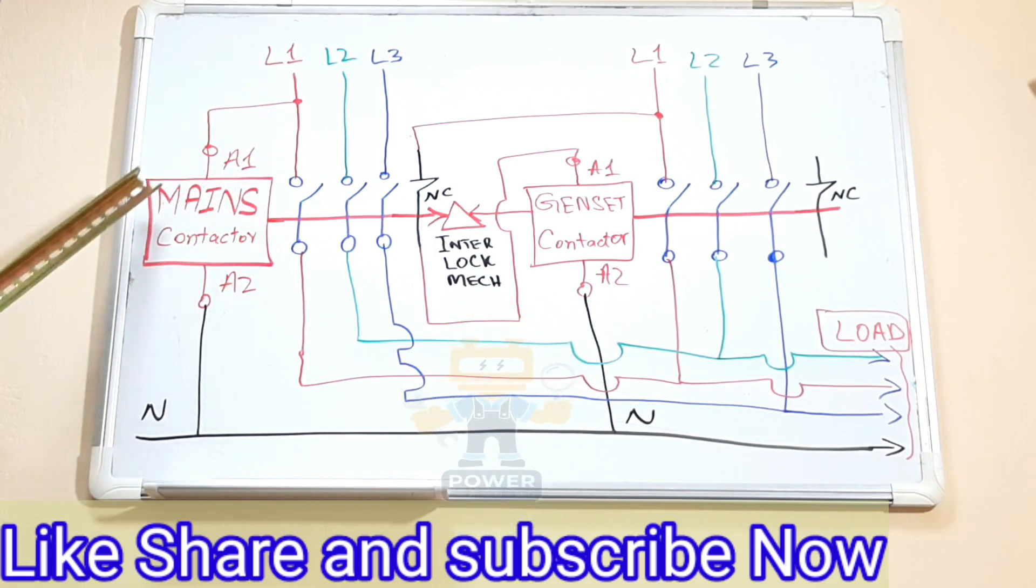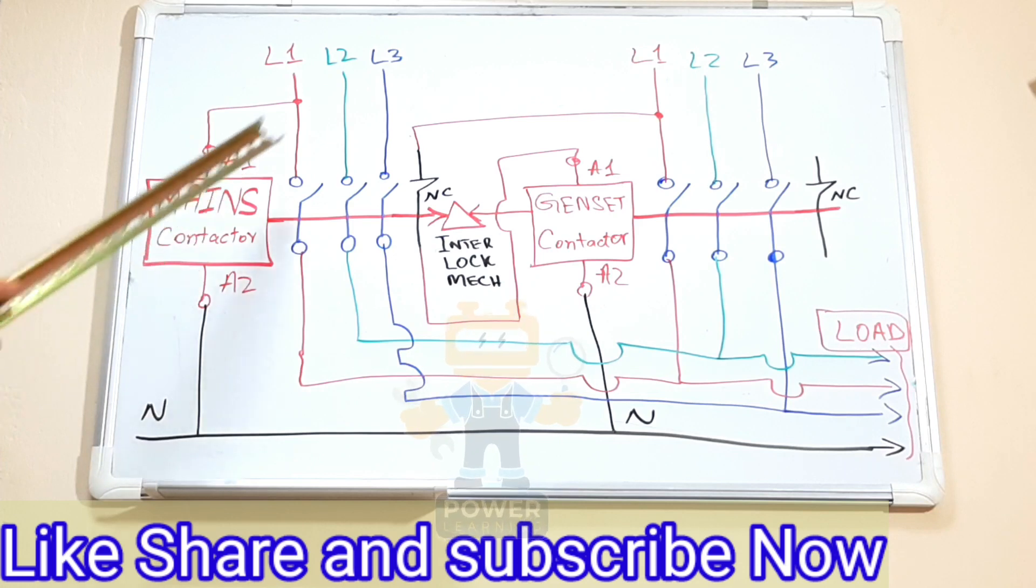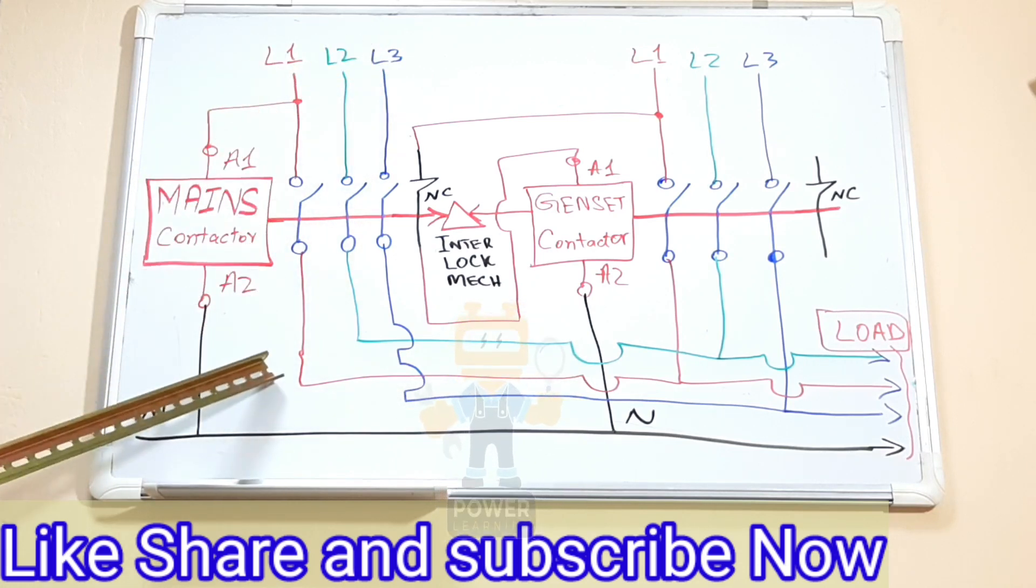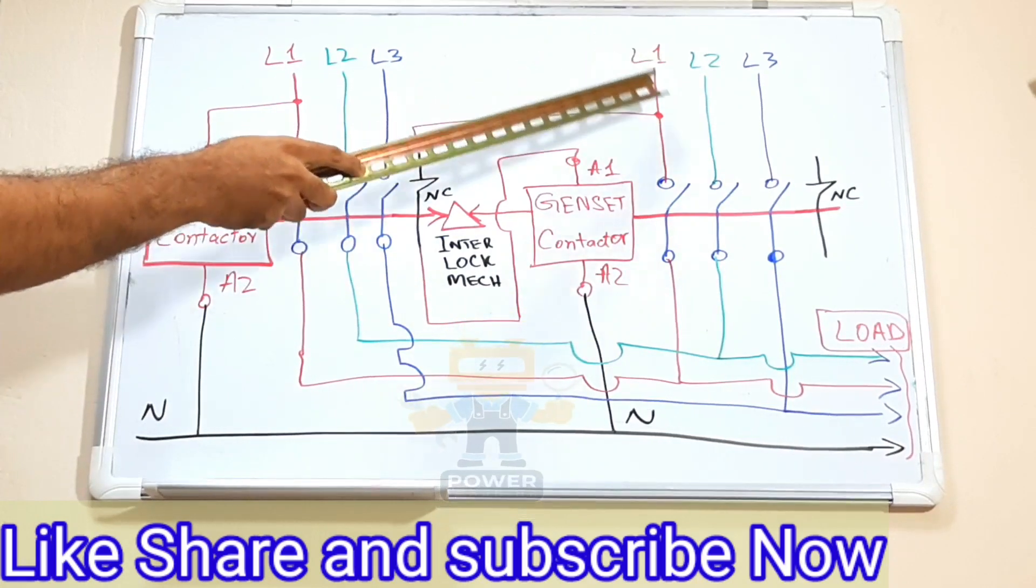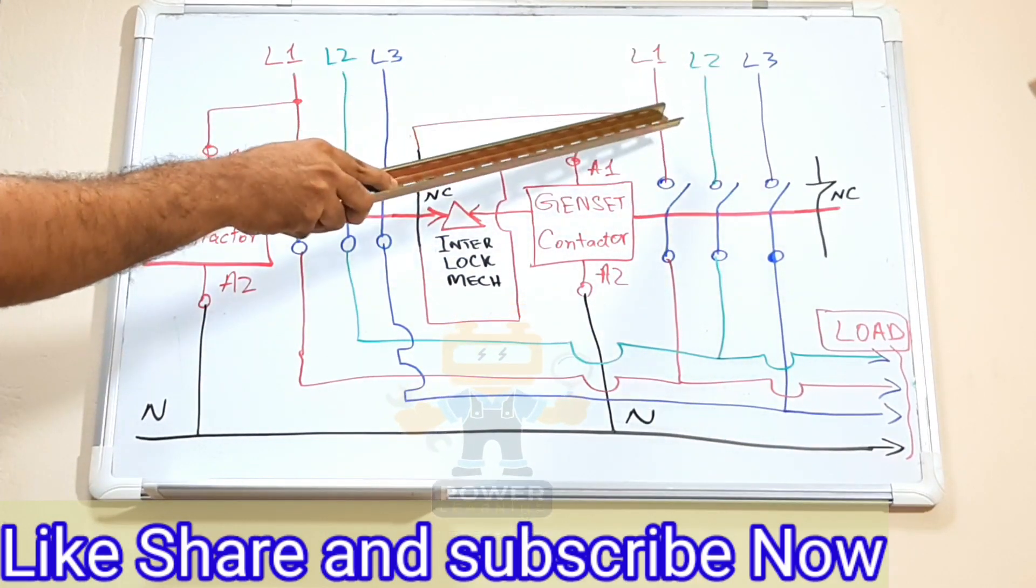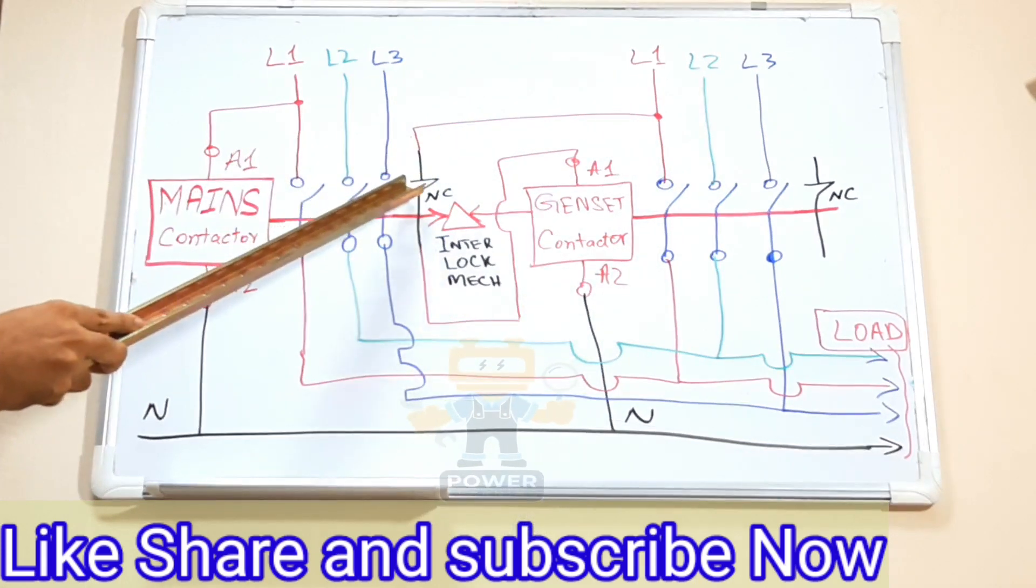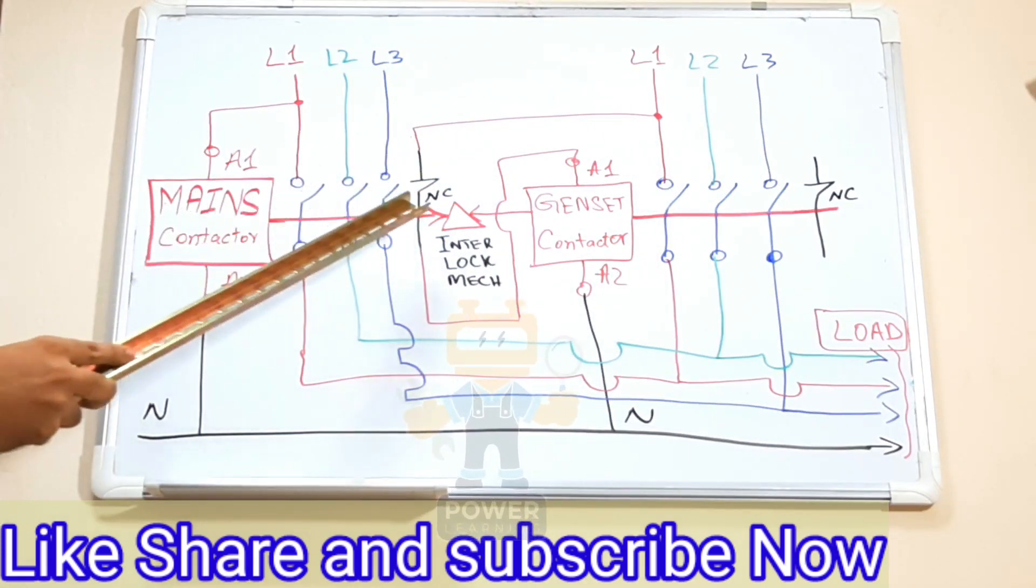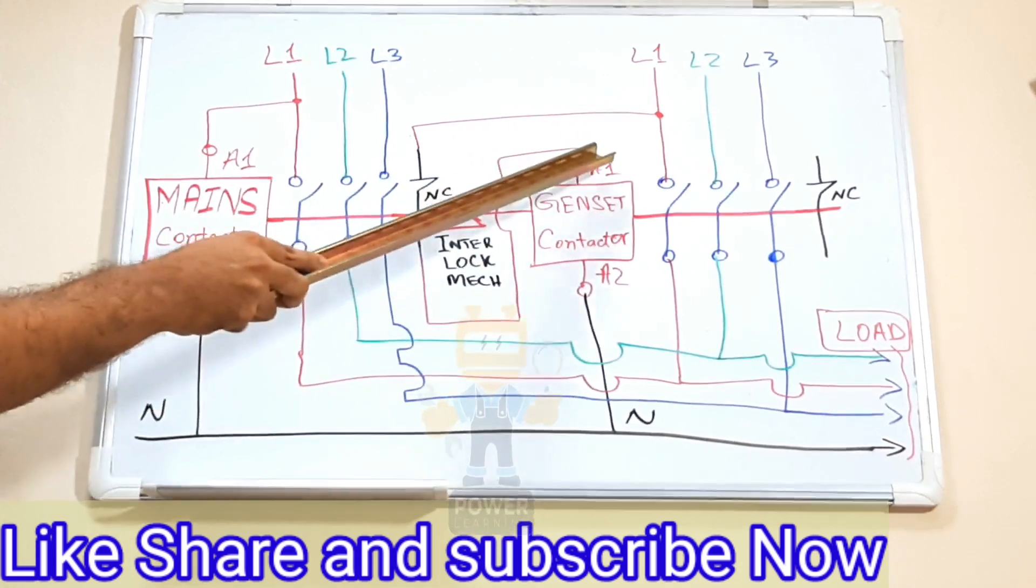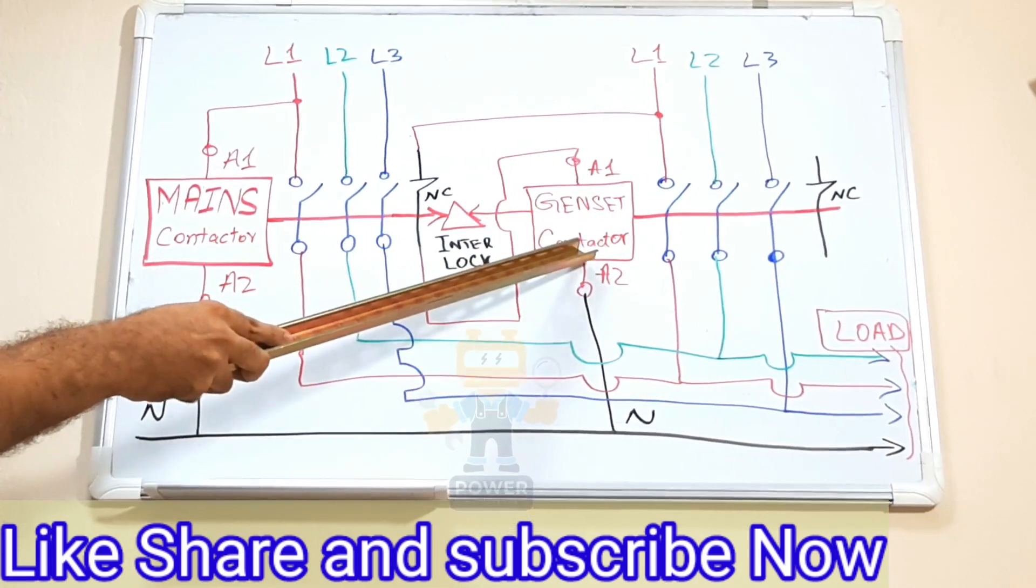When the power is available this will be energized directly. Neutral is connected here, our three phases are connected here and going towards the load. Here what I do, this is generator three lines. I will take one phase from generator, bring it through normally closed auxiliary contact of mains, then I take it back to the coil of genset contactor.